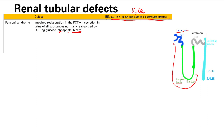There's decreased reabsorption of bicarb, so you're going to get an acidosis — specifically a metabolic acidosis, because the acidosis results from a renal origin. There's also decreased phosphate reabsorption, so you have hypophosphatemia. This can lead to osteopenia because you increase bone reabsorption to compensate for that low phosphate — you break down your bone to increase blood phosphate, which weakens the bone.